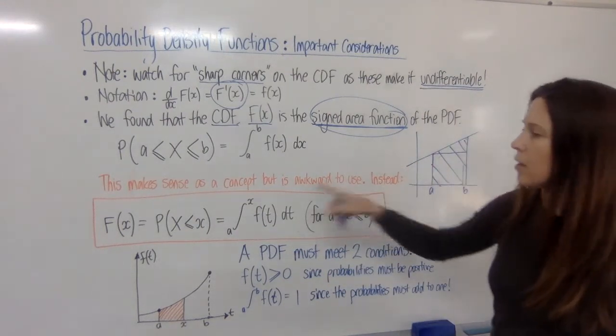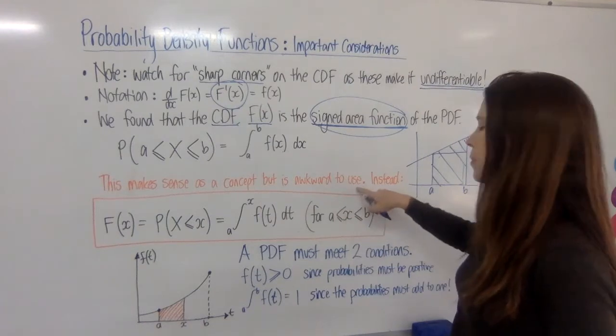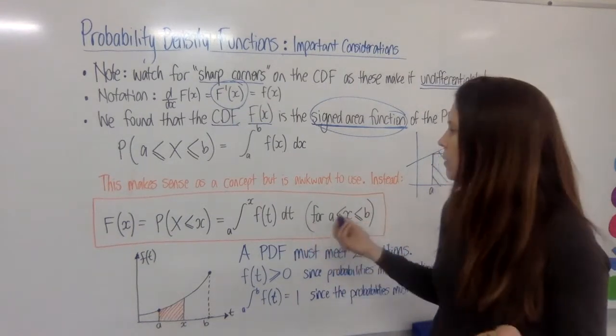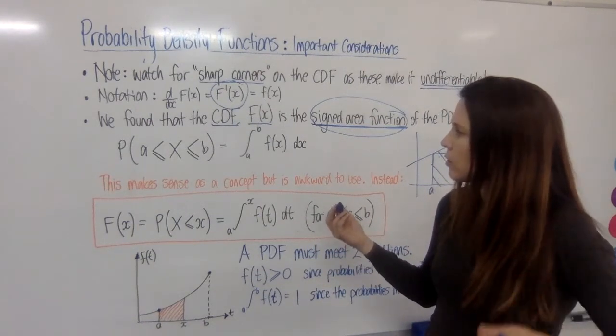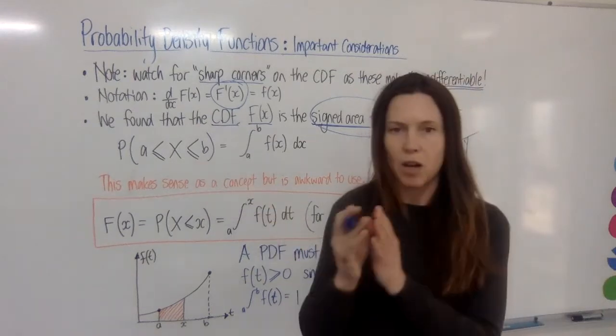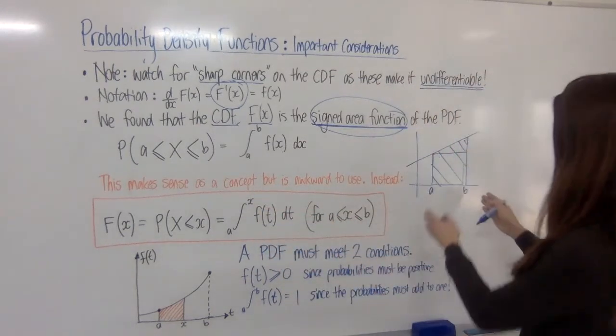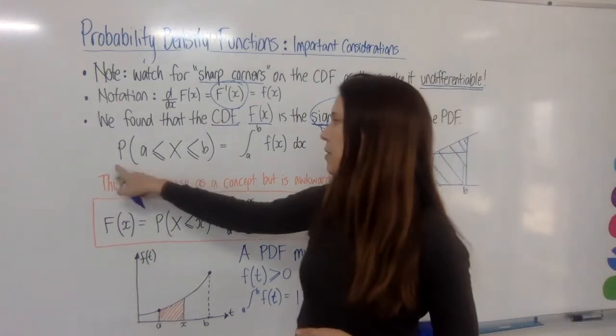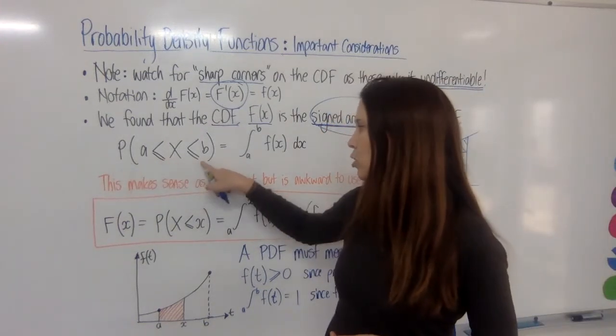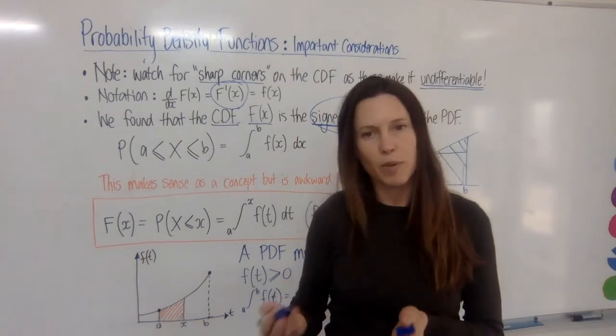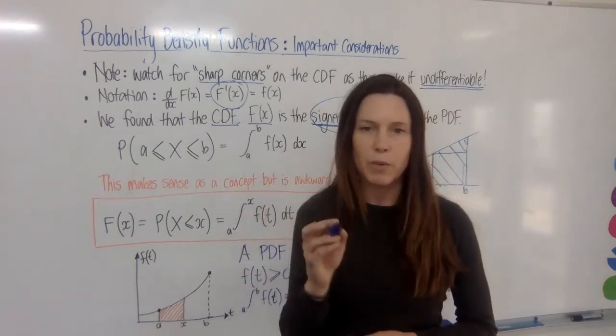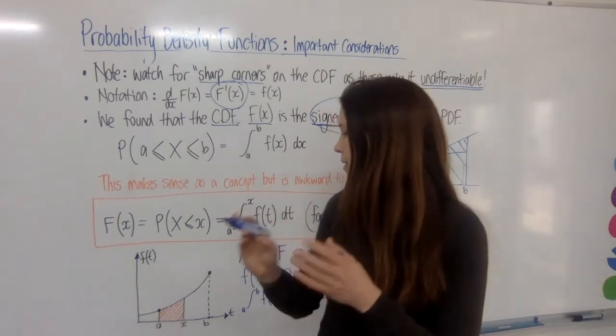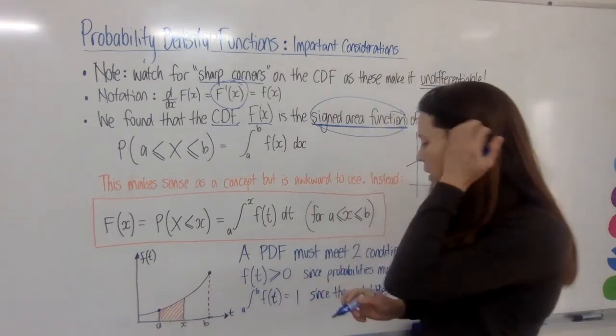Now, I've said this makes sense as a concept, but it's a little bit awkward to use. Why would it be awkward to use? Well, if we're saying that our whole experiment is between the bounds A and B, then we should know really that the probability of our variable lying between these is actually going to be 1. Now, if we want to sub in some other value of x, and I think it's helpful to look down at this picture down the bottom, and say, all right, I've got my lower bound A and my upper bound B.